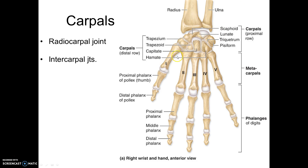The intercarpal joints are between the carpals themselves. The eight carpals are: scaphoid, lunate, triquetrum, pisiform, and then working toward the thumb — hamate (which has a prominent hook on the palmar surface), capitate, trapezoid, and trapezium. The distal row articulates with the metacarpals at the carpometacarpal joints. Carpometacarpal joints two through five are synovial planar joints, as are the intercarpal joints. The first carpometacarpal joint is unique.